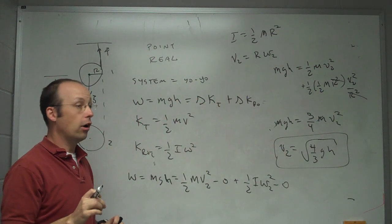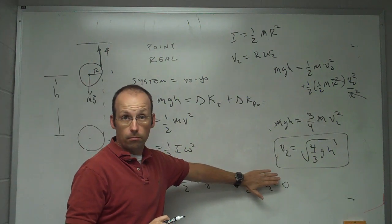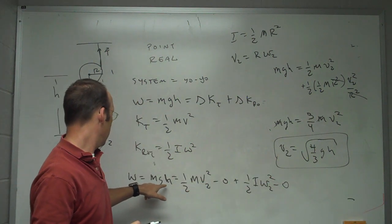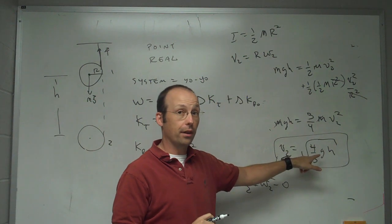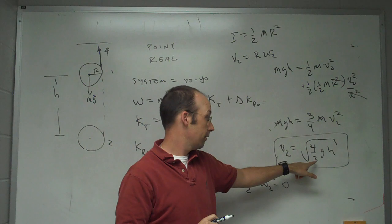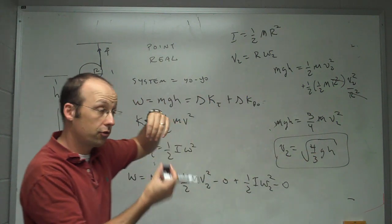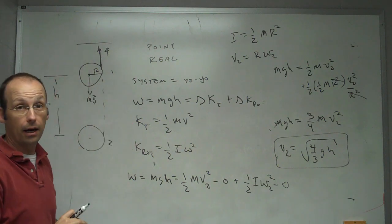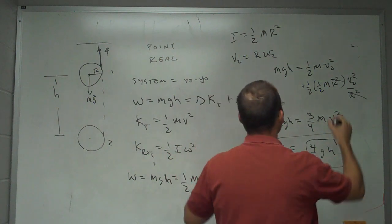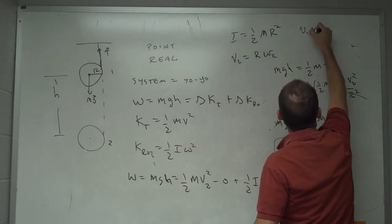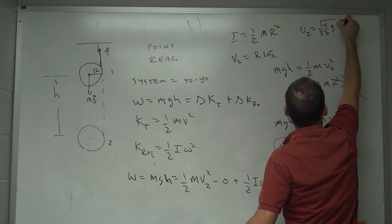Now, how does that compare to just dropping an object? If I just drop an object, it wouldn't have this term. And so you'd get, if you solve this, you'd get square root of 2gh. So this can be faster or slower than that. 2 is greater than four-thirds. So this is going to be slower, which makes sense. The string is doing something. It's making it not go so fast. Okay, so let me put this up here because it's important. v2 equals the square root of four-thirds gh.